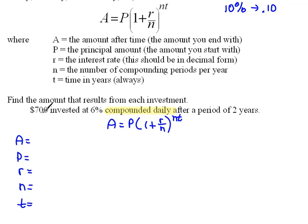So let's see what each piece is. Here we have $700 that we're going to invest. That means this is our principal amount, the amount we're starting with.